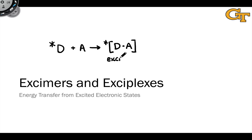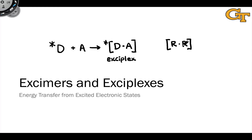The only difference between an exaplex and an exomer is that in an exomer, the two molecules involved in the complex are identical. So if we have two copies of the same molecule in a complex that is in an excited state, this is what's known as an exomer. Exaplexes and exomers are very common, even in situations when we wouldn't expect the ground state molecules to form a stable complex.